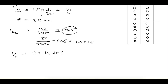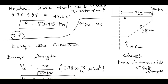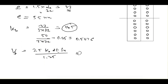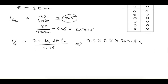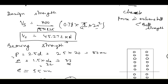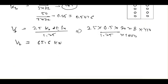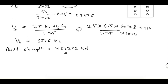Bearing strength V_dpb = 2.5 × k_b × d × t × f_u / 1.25. Here d = 20, and since it is a lap joint, t is the minimum of the two thicknesses = 8 mm, f_u = 410 MPa. So V_dpb = 2.5 × 0.5 × 20 × 8 × 410 / 1.25 = 65.6 kN. Shear governs, so bolt strength = 45.272 kN.